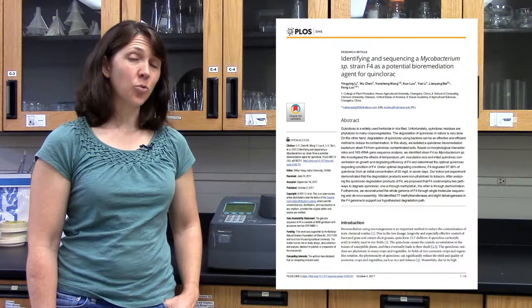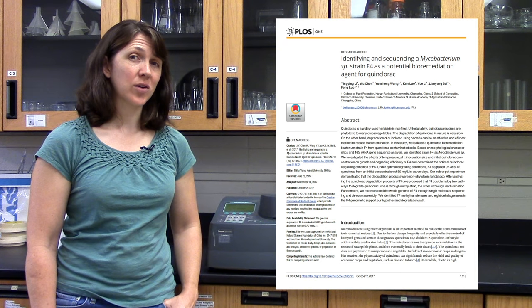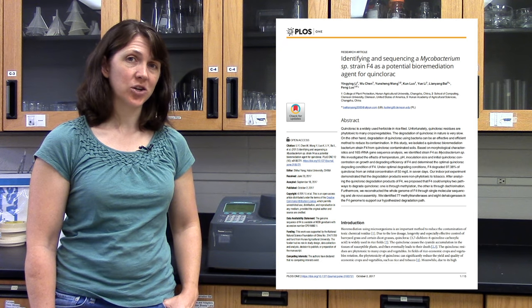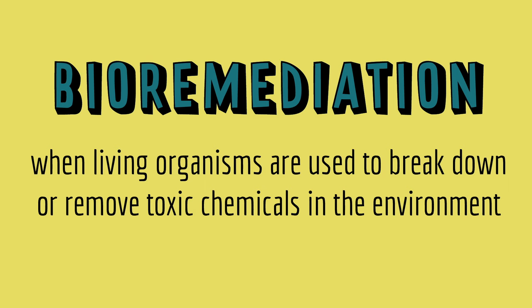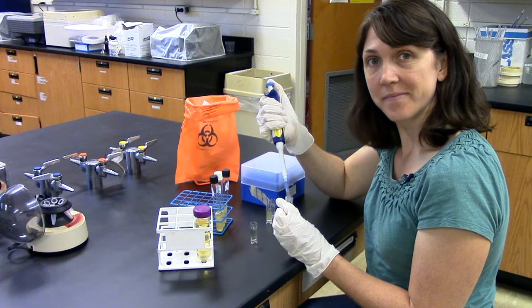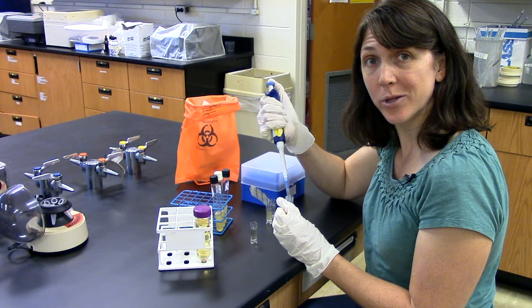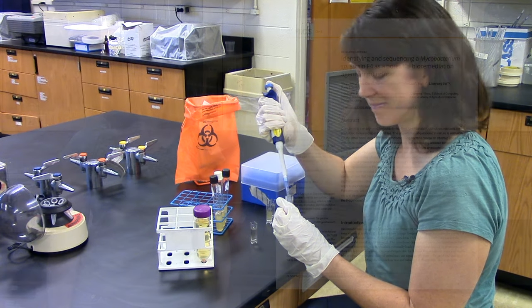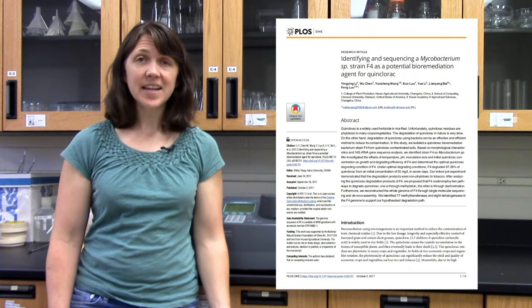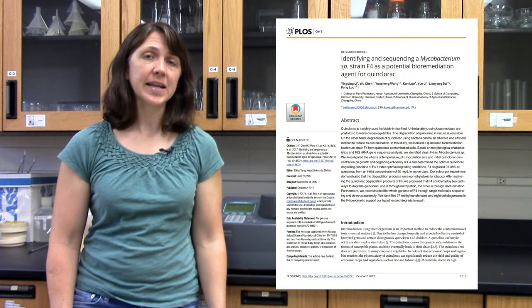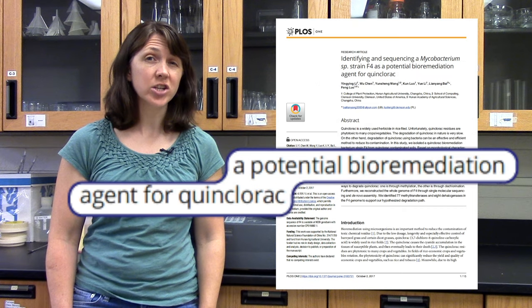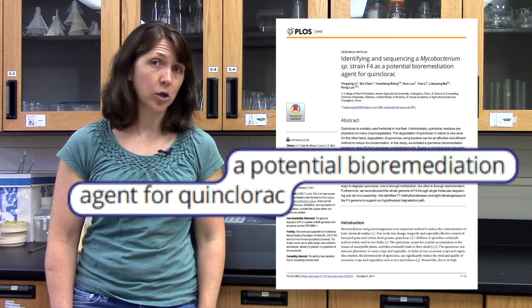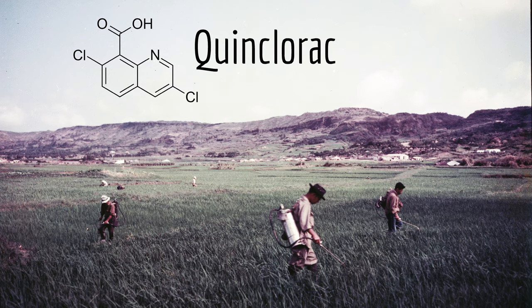In this 2017 paper, scientists characterized a strain of bacteria that can do bioremediation, which is when living organisms are used to break down or remove toxic chemicals in the environment. It's a way to use living things to clean up pollution. The scientists identified a type of bacteria that can do bioremediation of a toxic weed-killing herbicide called Quinclorac.